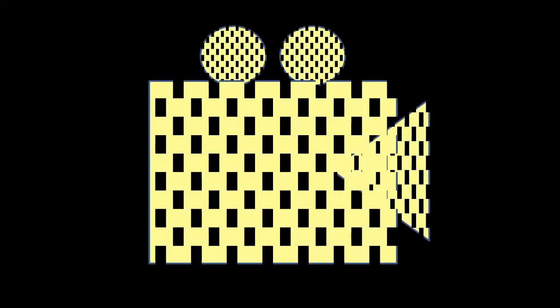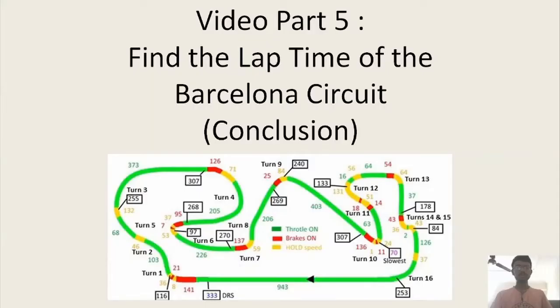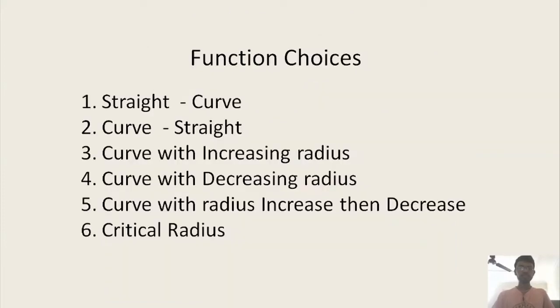Welcome to the final part of the vehicle dynamics series. In today's video we will see what are the special cases you need to deal with - various types of curves around the Spanish Grand Prix circuit - and at the end of the video there will be a surprise. In Part 5 we will see how to find the lap time of the Barcelona circuit. We will cover: what is a straight curve, curve with a straight, curve with increasing radius, curve with decreasing radius, curve with radius increase then decrease, and what is the critical radius.